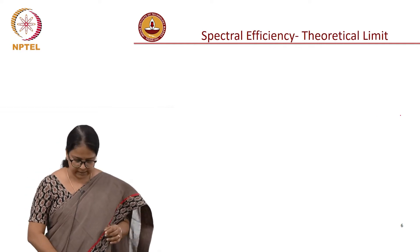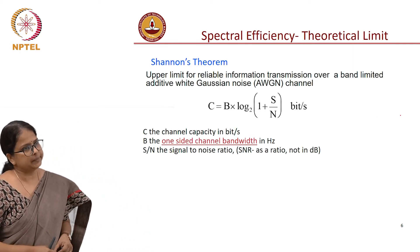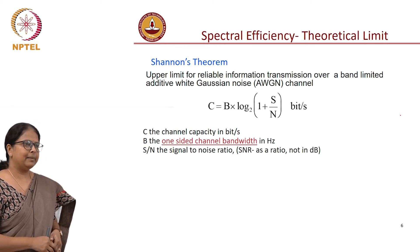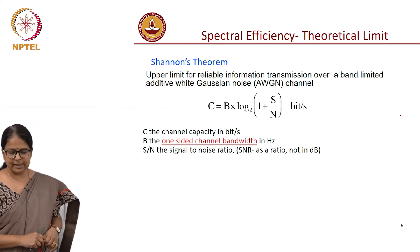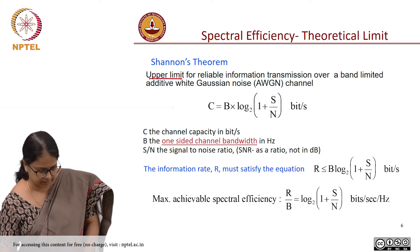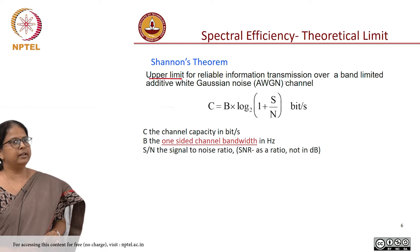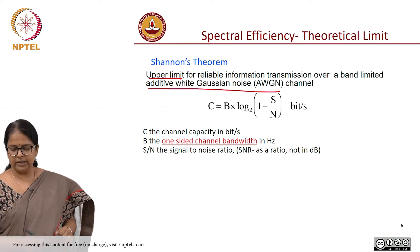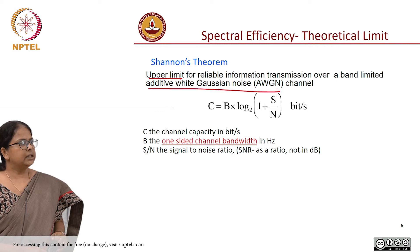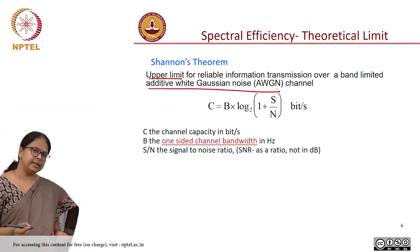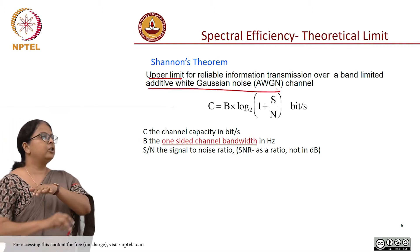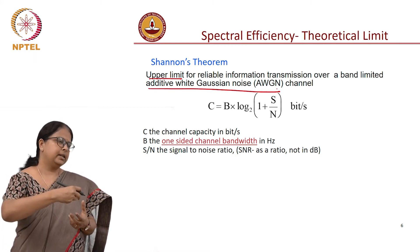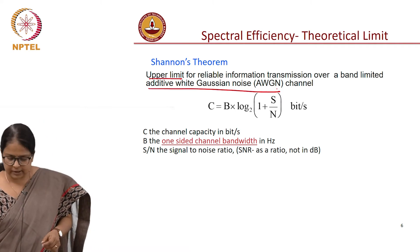That theoretical limit is given by Shannon's theorem. This was derived way back in 1947 or 48, published in 48, where he says that the upper limit for reliable information transfer over an additive white Gaussian noise channel, AWGN channel. If you look at the power spectral density, it has to be white, means noise of all frequencies are present. It is additive in nature. To the signal, the noise is additive in nature. So for such a channel,